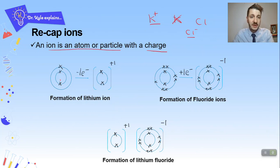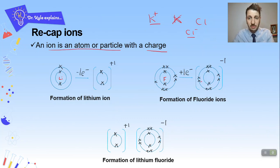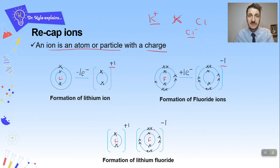Here we have a lithium ion in the middle with its electronic structure. Lithium has three electrons — it loses one electron because it's a metal and forms a Li⁺ ion. On the other side, we have the formation of a fluoride ion. Fluorine gains an electron because it's a non-metal, giving it a full outer shell. It now has more electrons than protons, so it becomes minus one. We have our positive and negative ions, and they come together with that electrostatic force of attraction, forming lithium fluoride — shown in a dot and cross diagram.